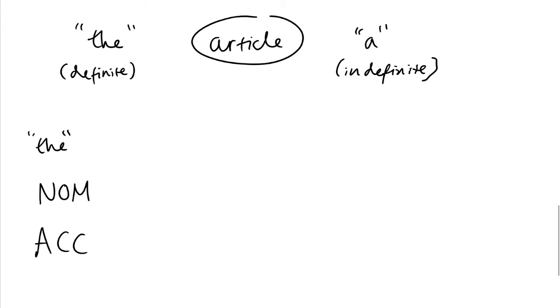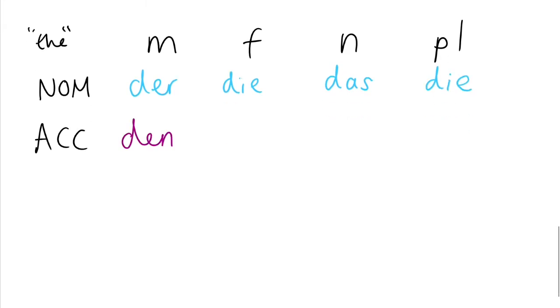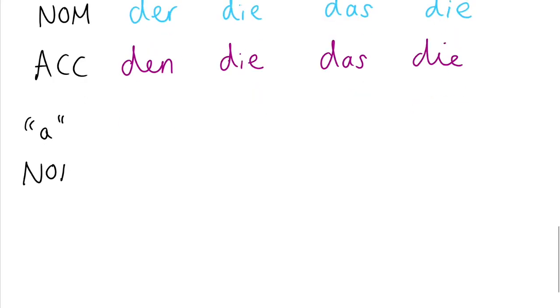So how do the words the and a in German change? So we can see in the nominative, the masculine word for the is der, die, das, die. And the accusative, den, die, das, die. Depending on whether the word is masculine, feminine, neuter or plural. Or whether it's nominative or accusative.